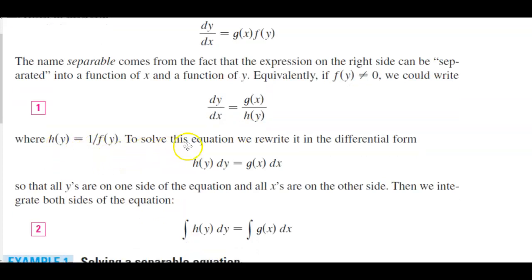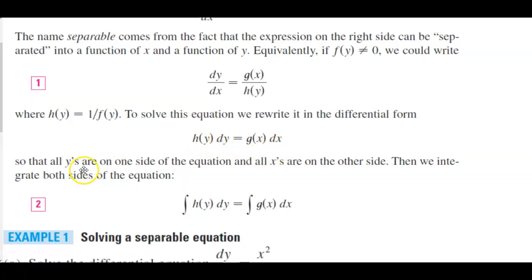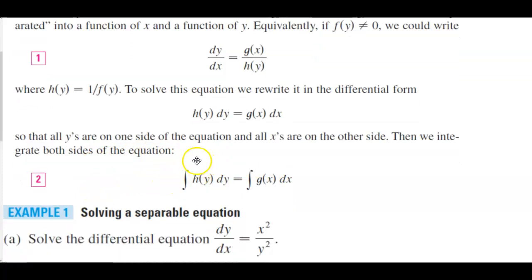To solve this equation, we rewrite it in differential form: h(y) dy equals g(x) dx, so that all the y's are on one side of the equation and all the x's are on the other side. Then we integrate both sides of the equation: the integral of h(y) dy equals the integral of g(x) dx.